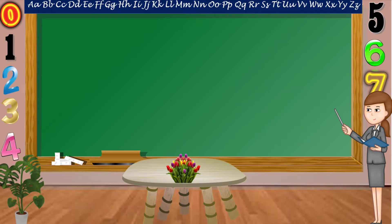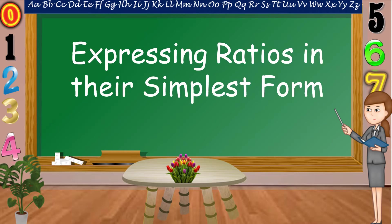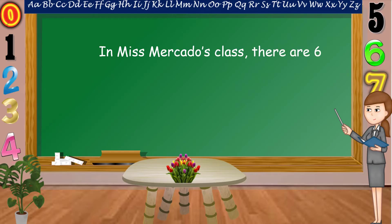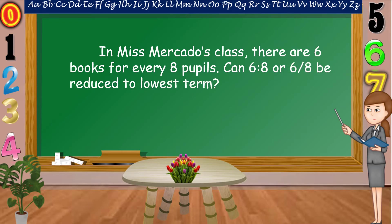Today, we are going to discuss about expressing ratios in their simplest form. In Ms. Mercado's class, there are 6 books for every 8 pupils. Can 6 is to 8, or 6/8, be reduced to lowest term?